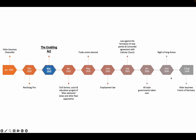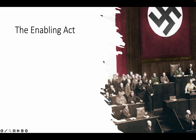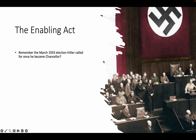It happened a month after the Reichstag fire, in March of 1933 — the Enabling Act. Remember the March 1933 elections that Hitler called for once he became chancellor? He wanted to become the biggest party, to become the largest share.